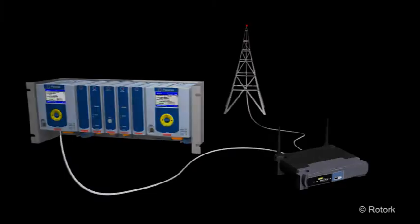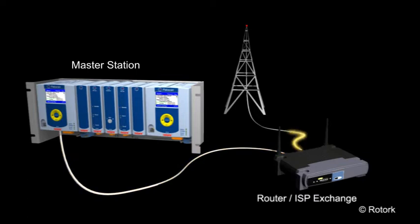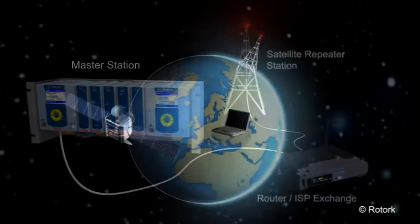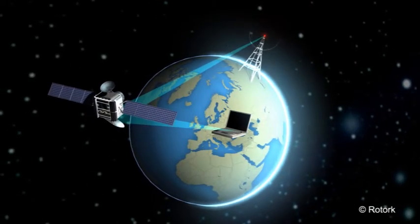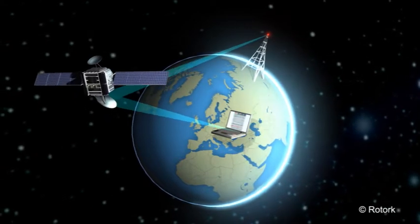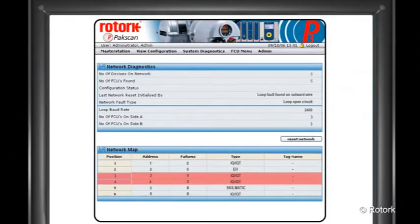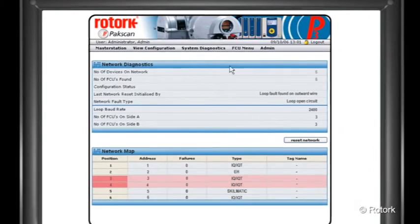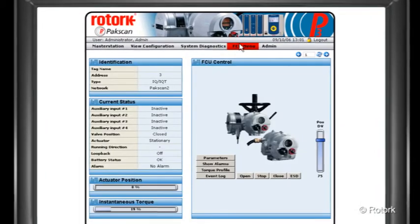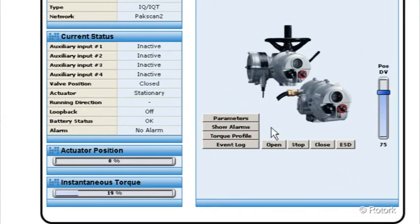The data gathered from each actuator by the master station is made locally available via multiple serial and Ethernet ports, and can also be accessed in any global location using standard Ethernet infrastructure. This means that from any location, individual actuators can be securely interrogated using the master station's built-in web pages.